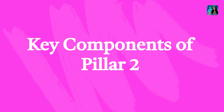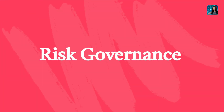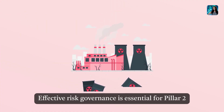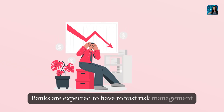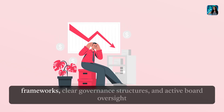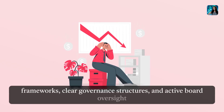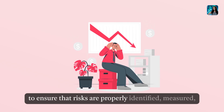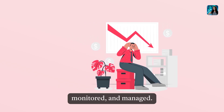Key Components of Pillar 2: Risk Governance. Effective risk governance is essential for Pillar 2 compliance. Banks are expected to have robust risk management frameworks, clear governance structures, and active board oversight to ensure that risks are properly identified, measured, monitored, and managed.